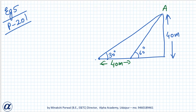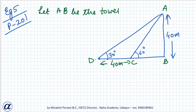This is A, this is D, this is C, and this is B. Let AB be the tower. BC is the length of shadow when the angle is given. It is given in the question — the tower height is unknown.